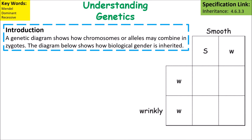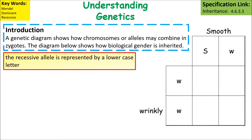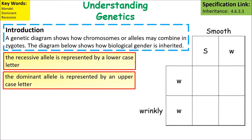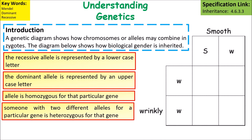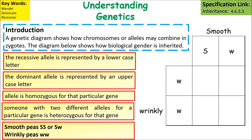A genetic diagram shows how chromosomes or alleles may combine in a zygote. The diagram shows how wrinkly or smooth traits in peas are inherited. The recessive allele is represented by a lowercase letter and the dominant allele is represented by an uppercase letter. Someone who has two of the same alleles is homozygous for that gene, while someone with two different alleles is heterozygous. The gene combinations that give a smooth pea would be SS or Sw, where S is the dominant gene shown with a capital letter, while the wrinkly pea must be ww — small w, small w.